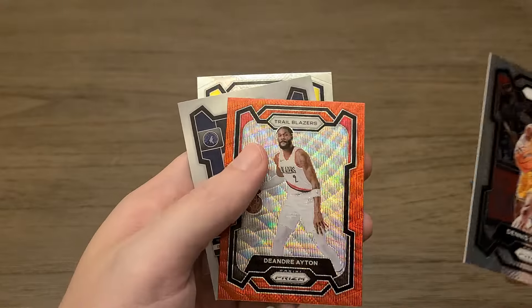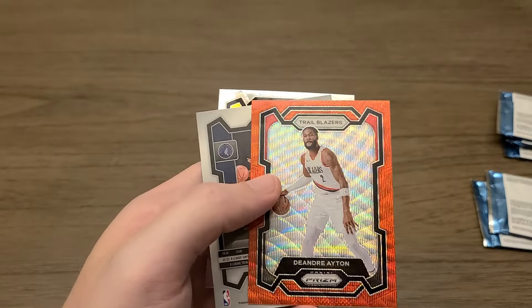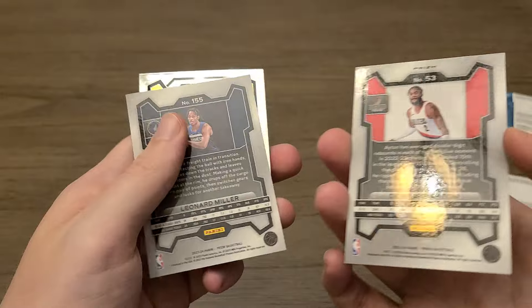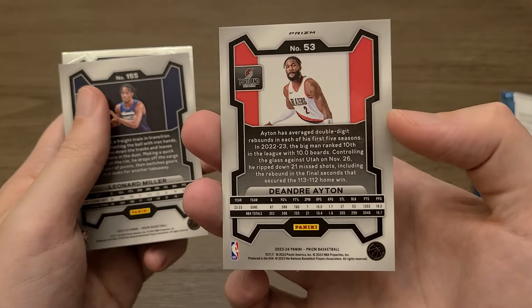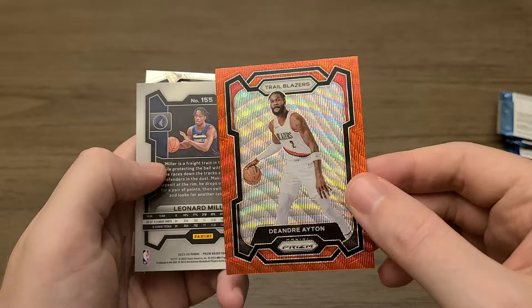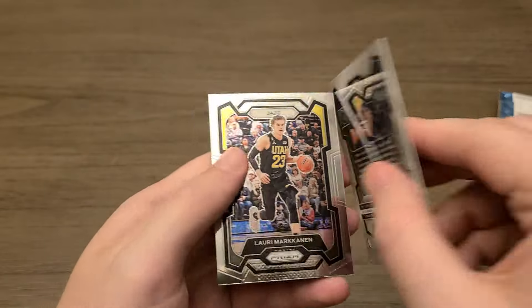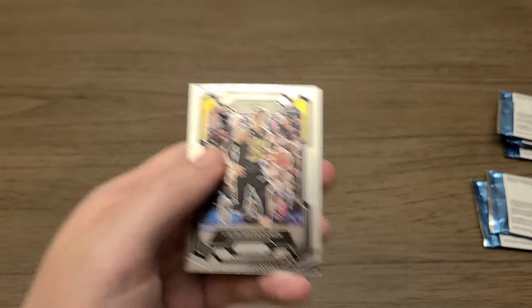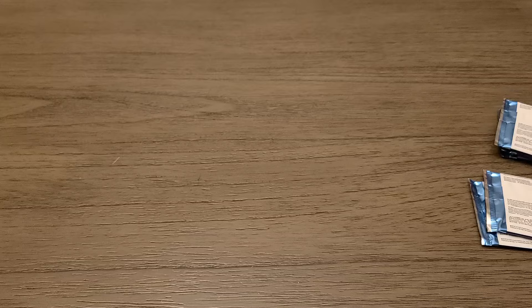DeAndre Ayton. So, ooh, that's not a Silver Prism at all. It's not numbered. But it's a red something. That's kind of like a color match. Very cool. Other than the auto, that might be our best card yet. Although the Scoot's pretty cool.